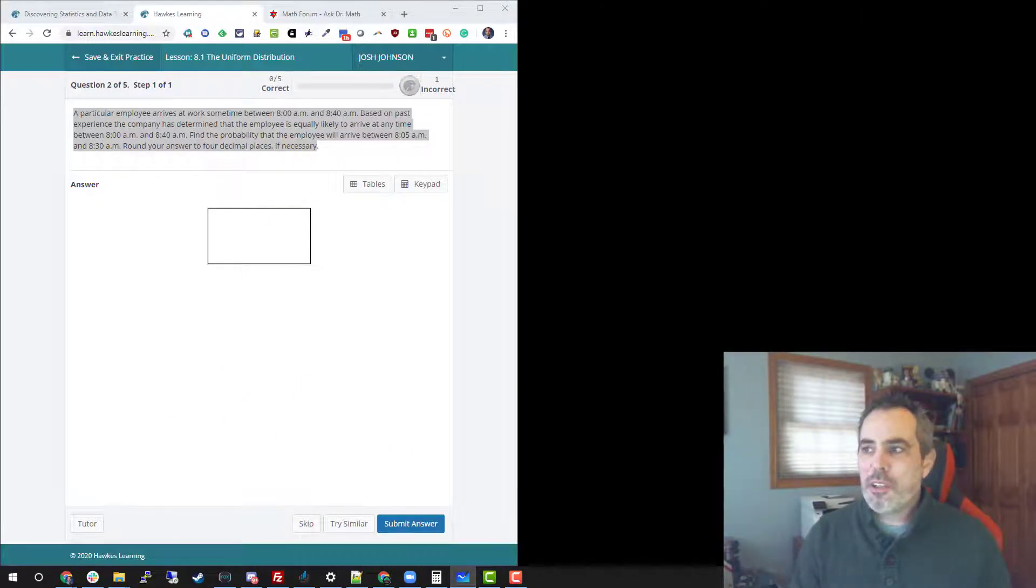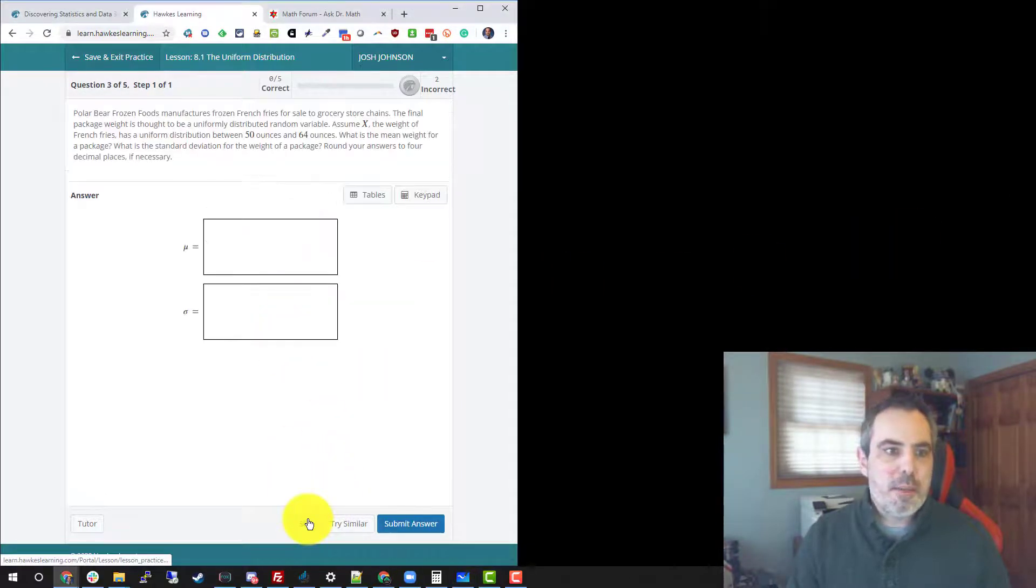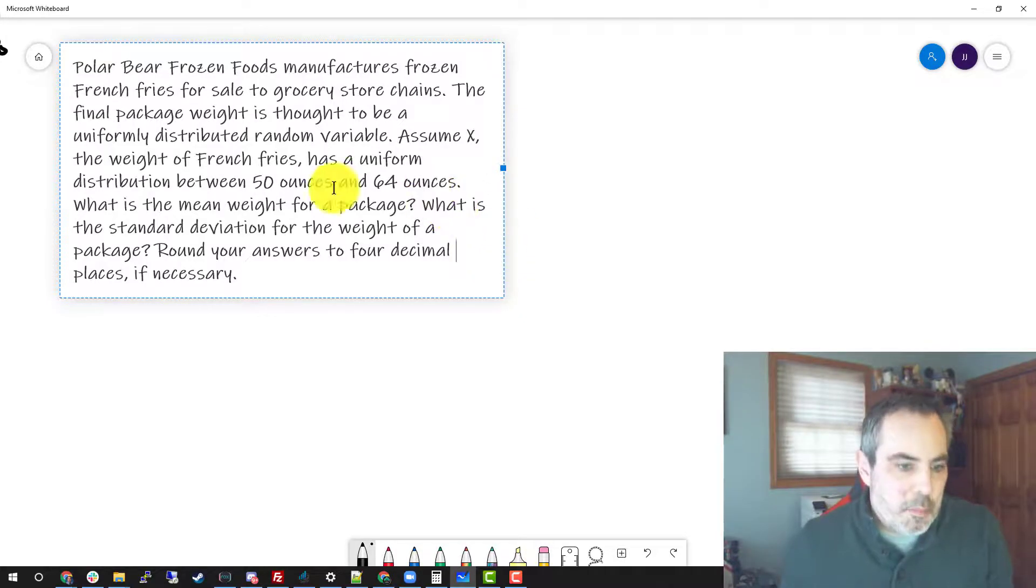There's a couple other questions that they're going to ask. Here's another example. In this case, we're talking about polar bear manufacturing frozen French fries. Assume X is the weight of the French fry, and each French fry has a uniform distribution between 50 and 64 ounces. They want to know what's the mean and what's the standard deviation.